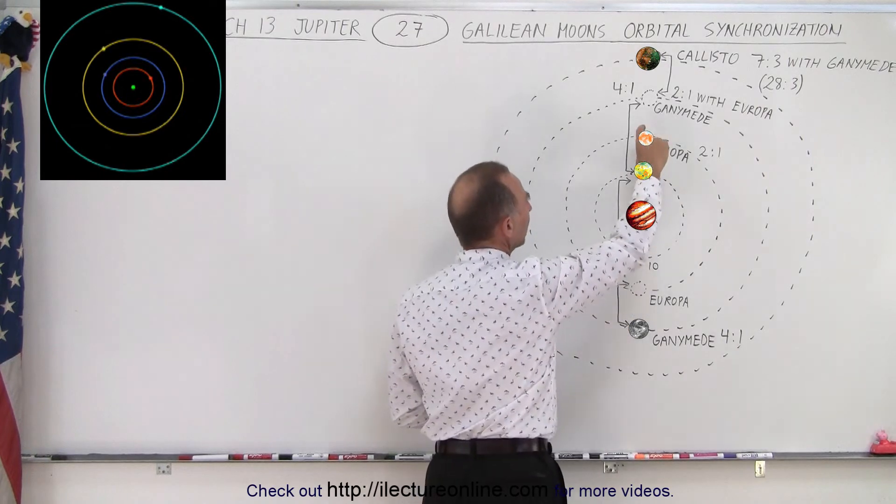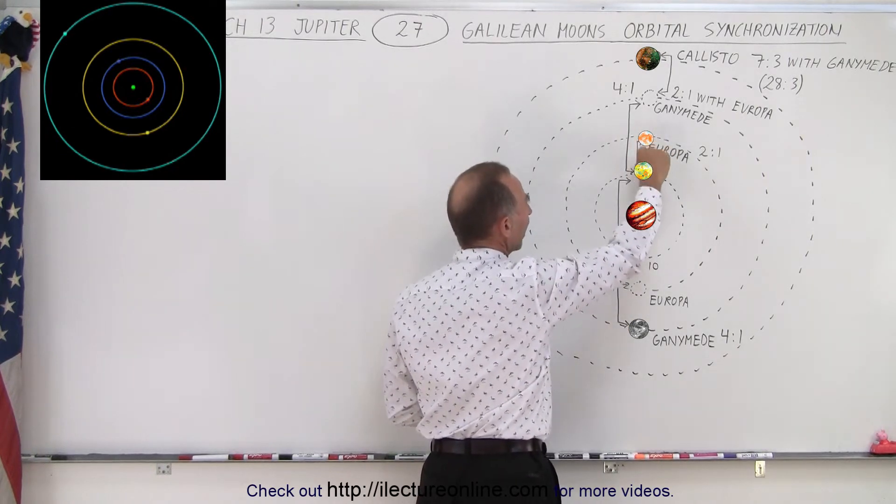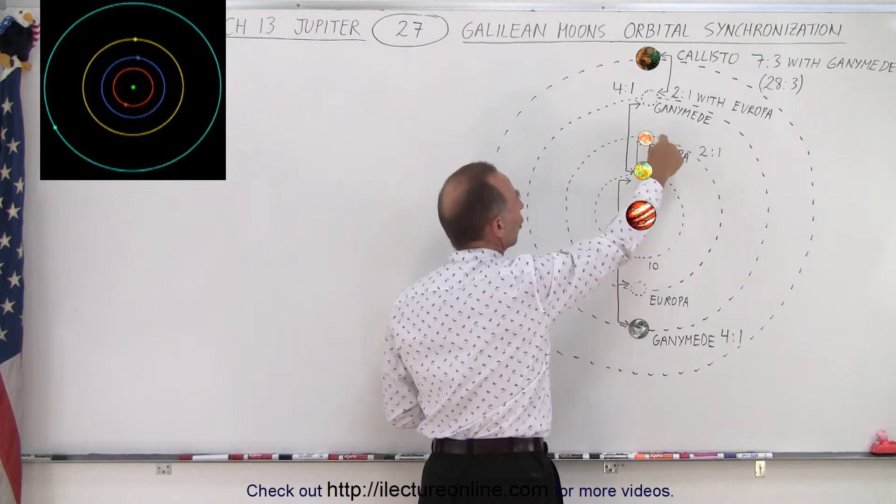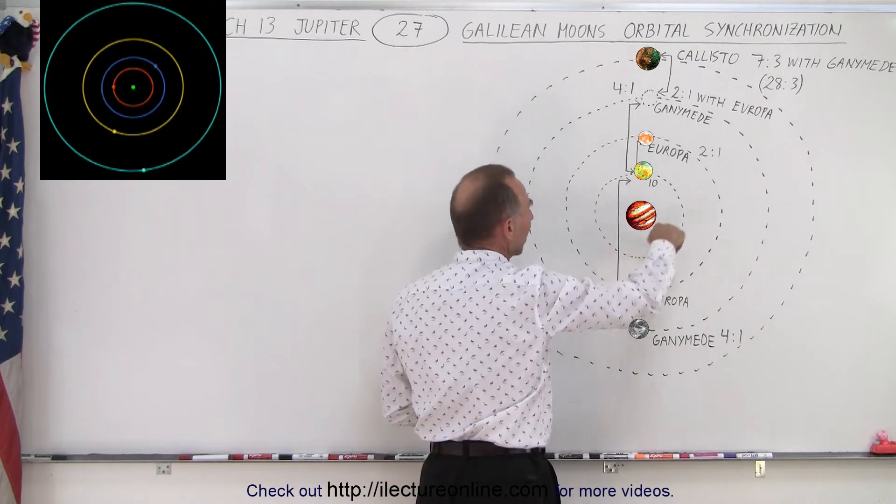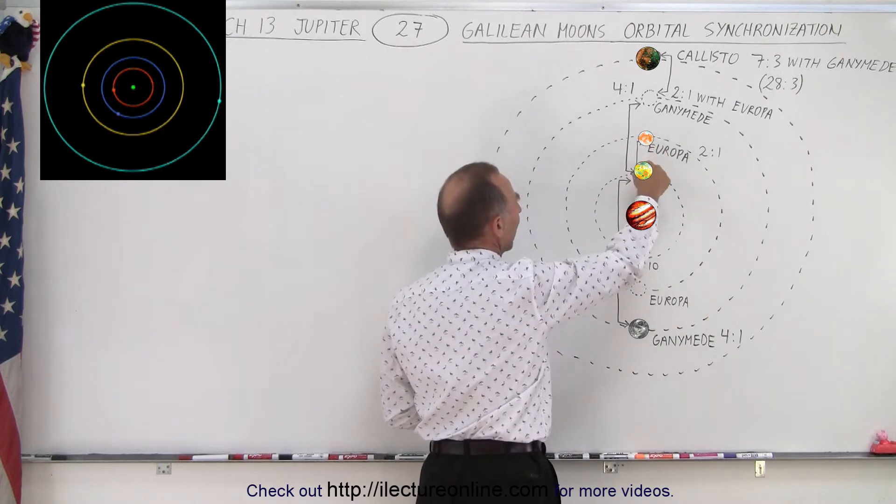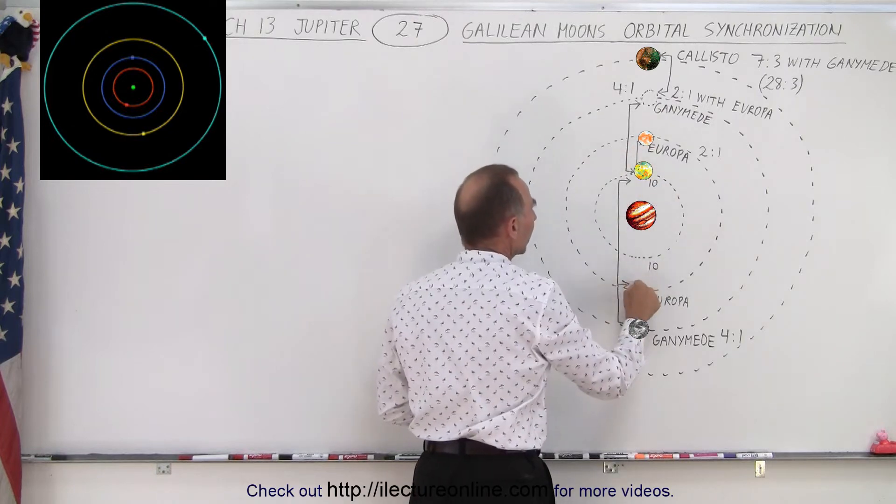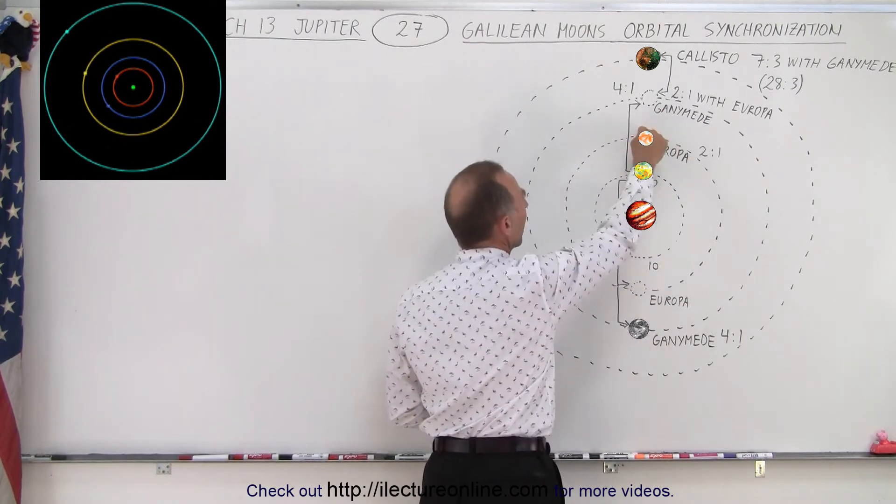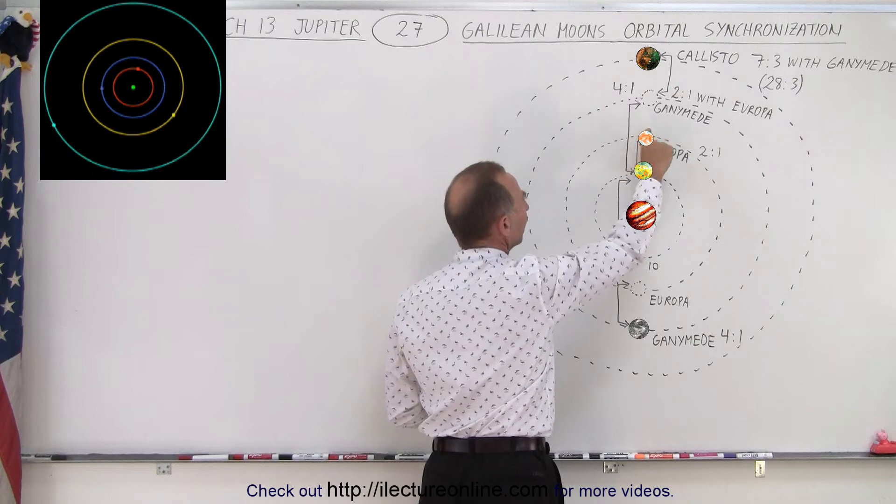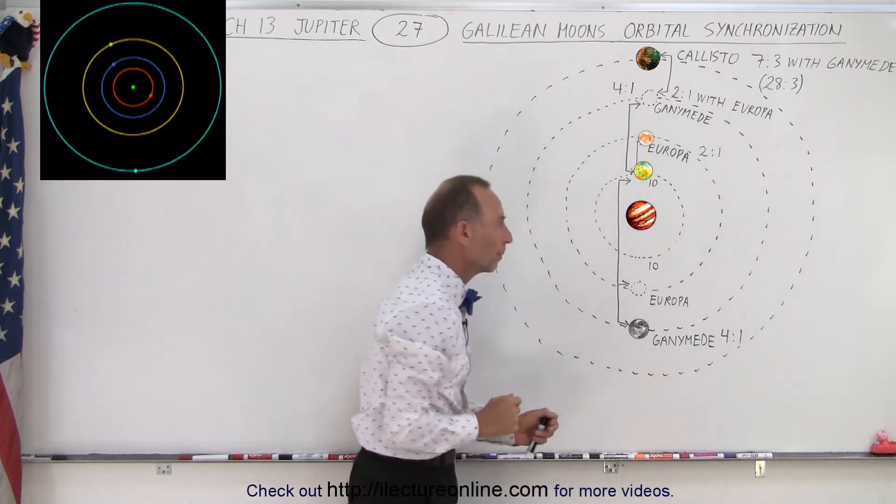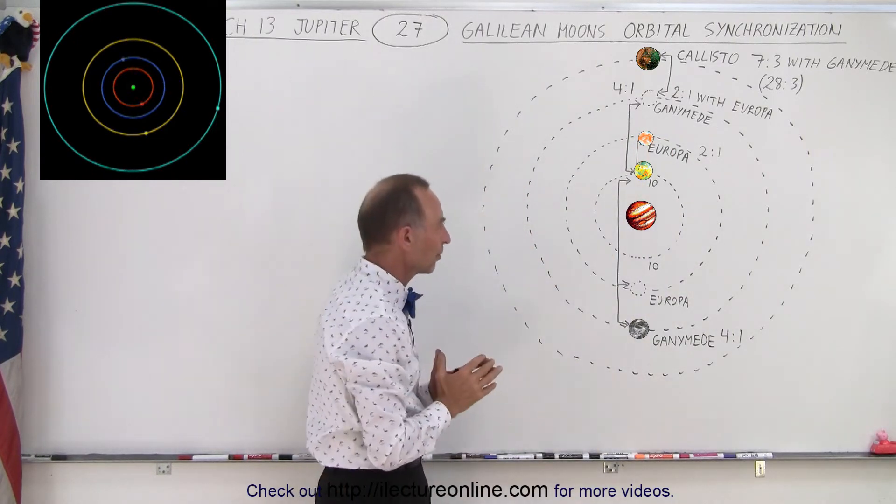So we have Europa and Io, they'll be on the same side once every Europa orbit as Io goes around twice, so that means that Io will be up here, Europa will be down there, and then Io will be up here, Europa will be back up there. So that happens every one Europa orbit for two Io orbits.